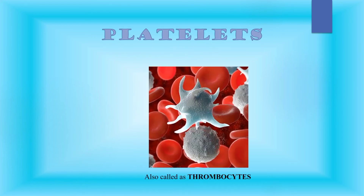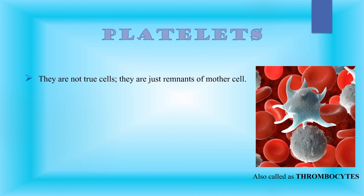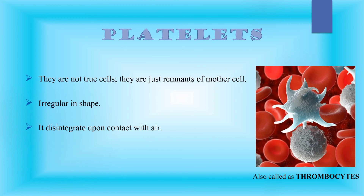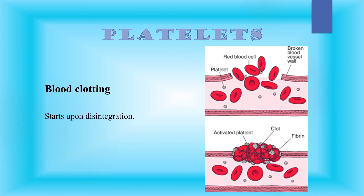Now let's talk about platelets, which are also called thrombocytes. Platelets are not true cells — they are just remnants of mother cells. Platelets are irregular in shape, and their important attribute is that they disintegrate upon contact with air. This is the reason why even in fresh blood, platelets cannot be observed. Such an attribute is significant since upon disintegration, the blood clotting process begins. The blood clotting process is an adaptation that stops bleeding due to an injury. Depending on the severity of the injury, blood should clot within 2 minutes when a cut or injury occurs. In the absence of the blood clotting process, bleeding continues and it can cause the loss of life.